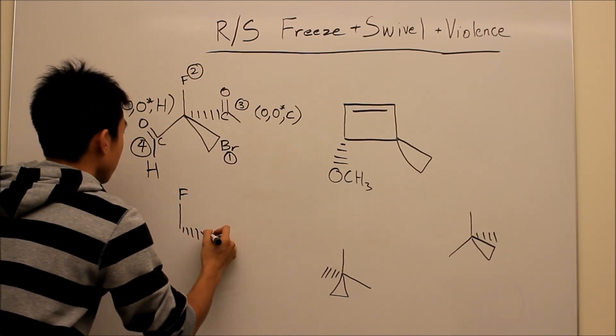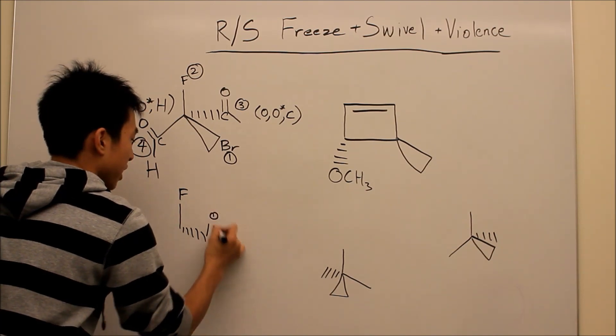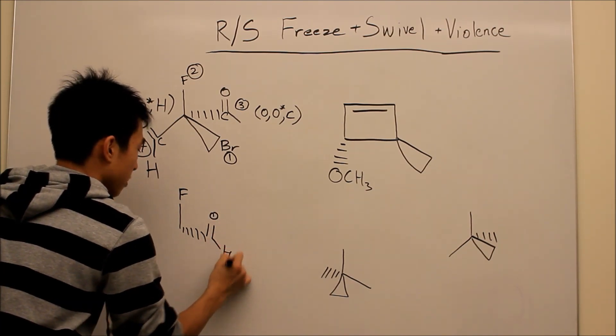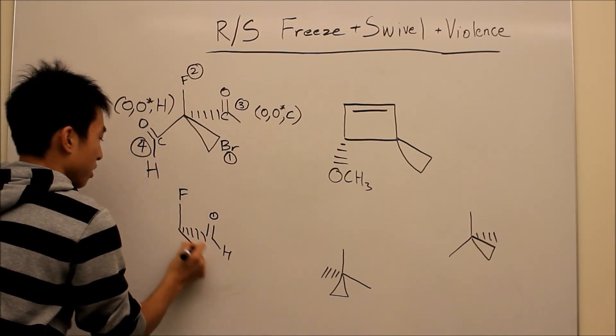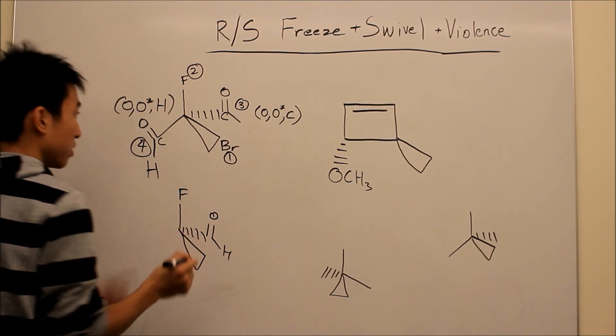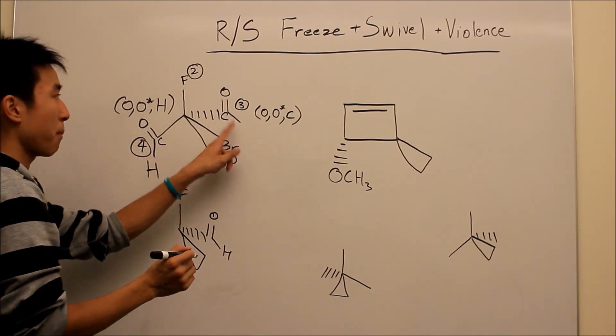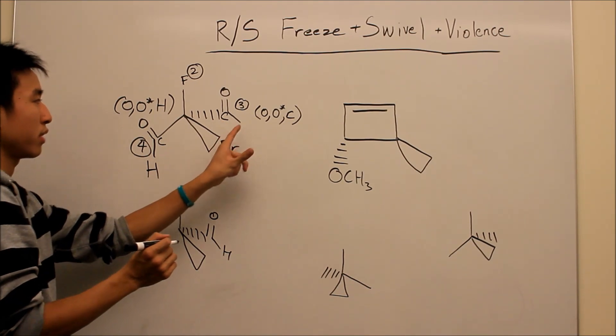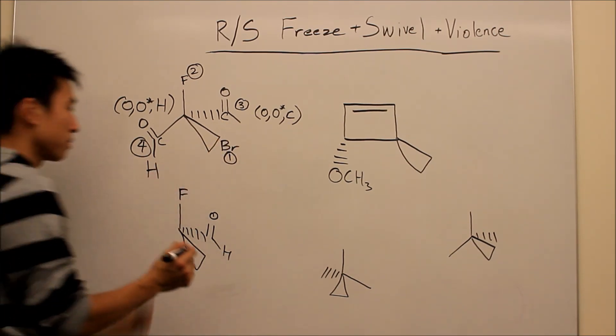So then he's over here, aldehyde over here, and then in the front now — when you freeze and swivel, whatever is in the back gets swiveled up to the front.